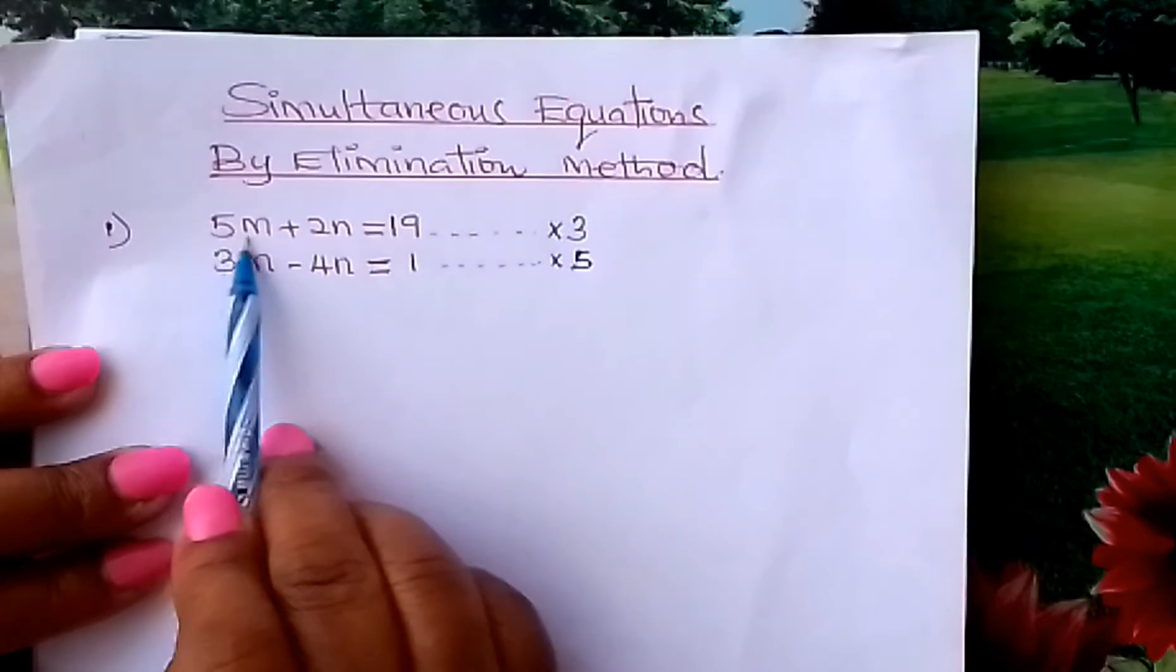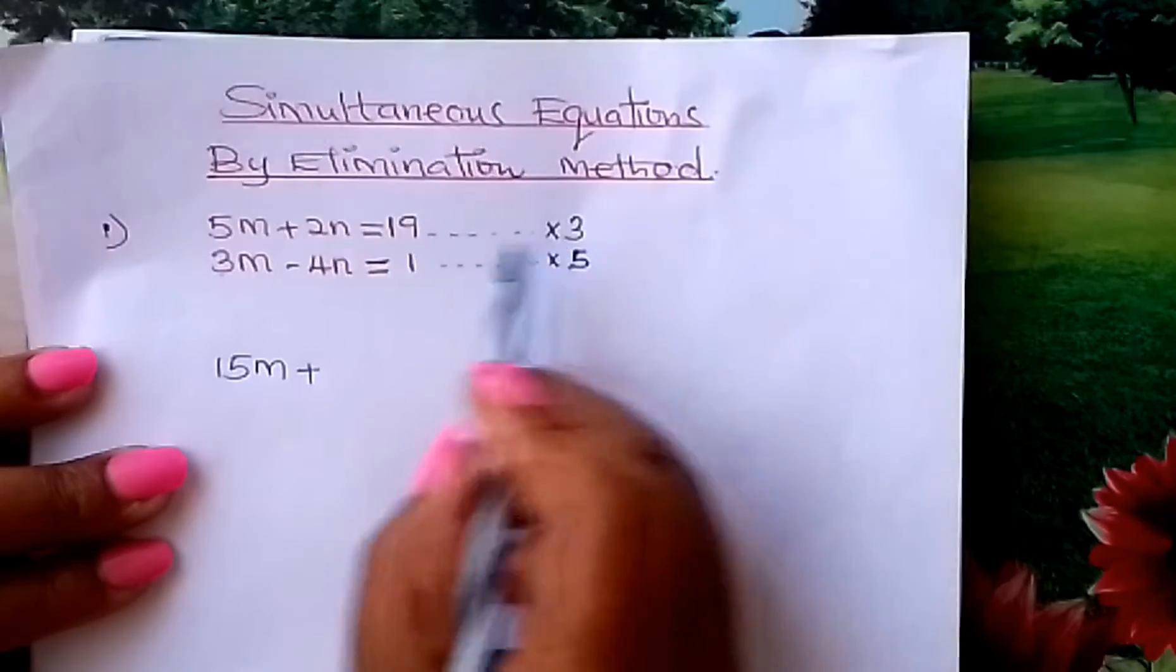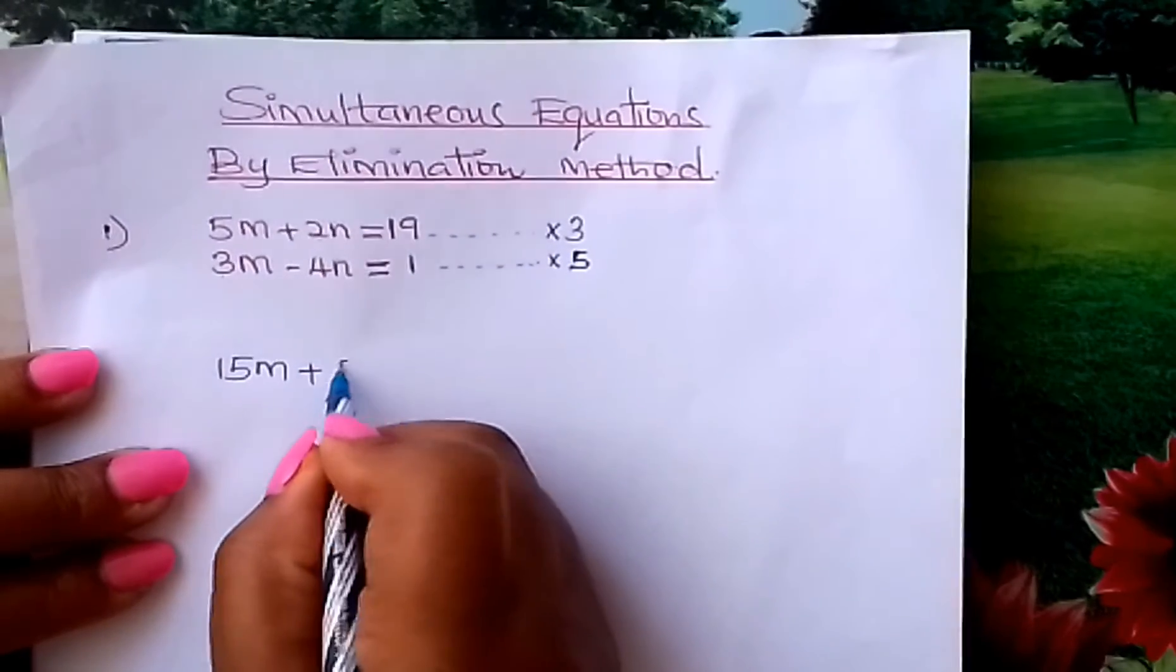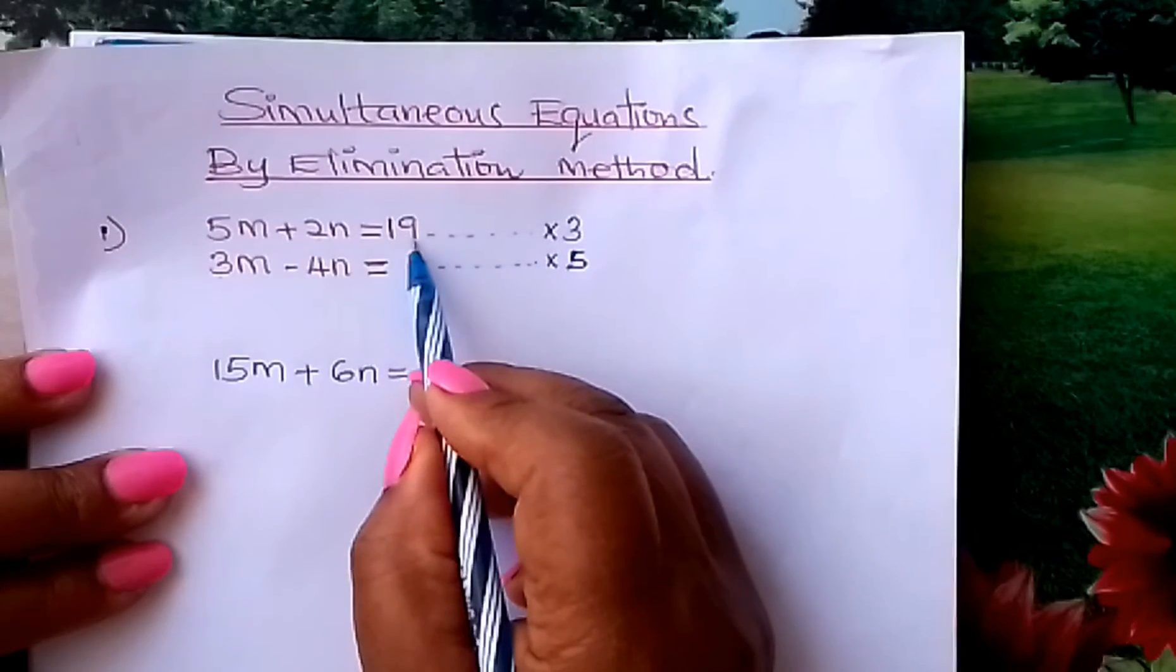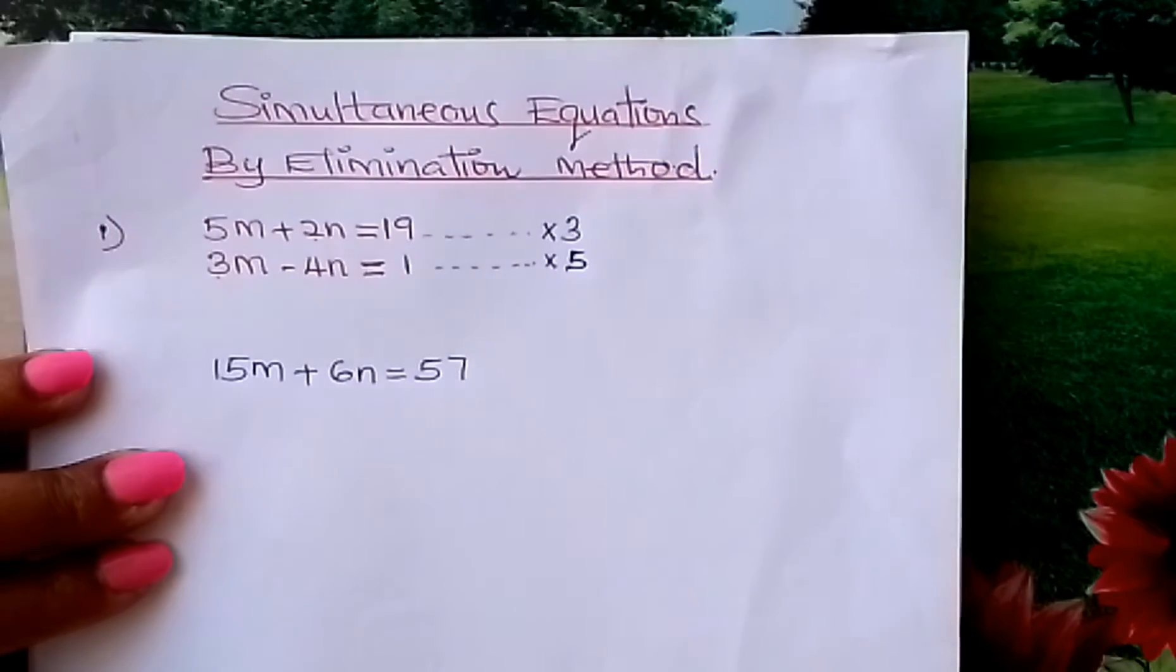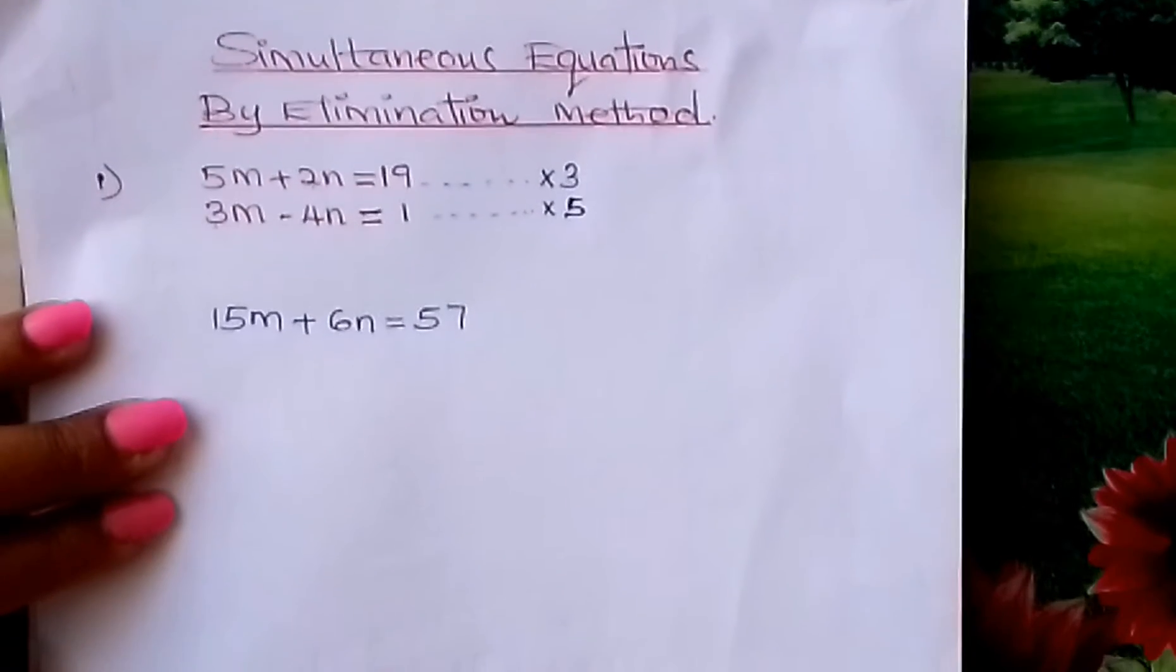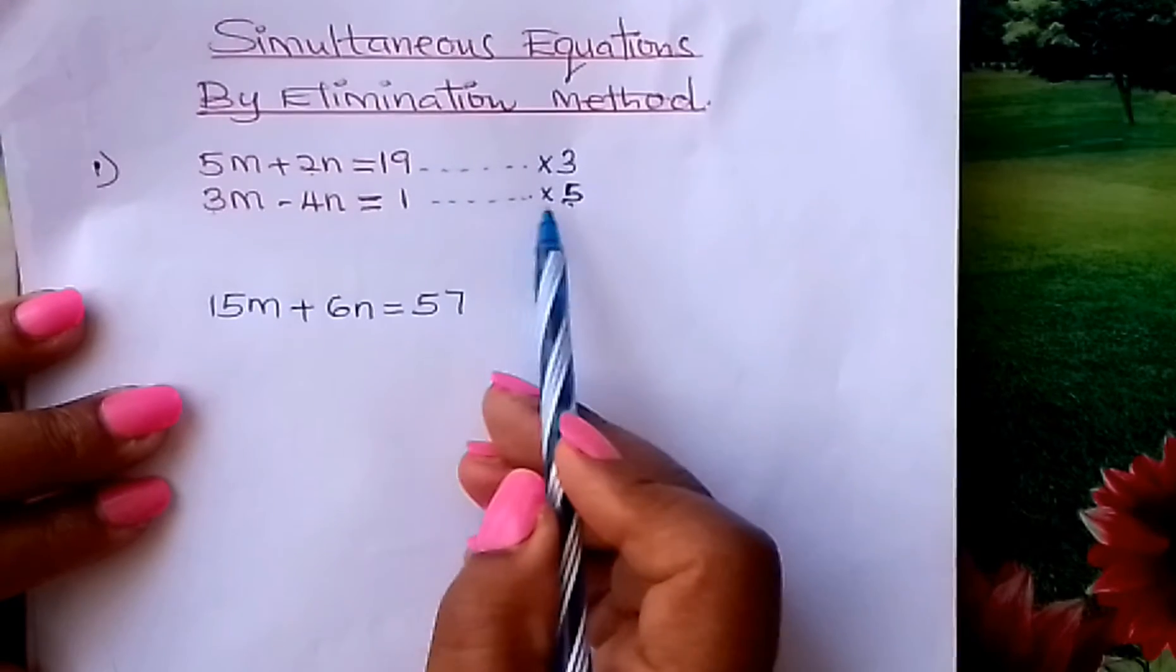3 multiplied by 5 is 15M plus 3 times 2N is 6N equals 3 times 19 which is 57. You multiply every term by 3. We come to the second one, multiply by 5.